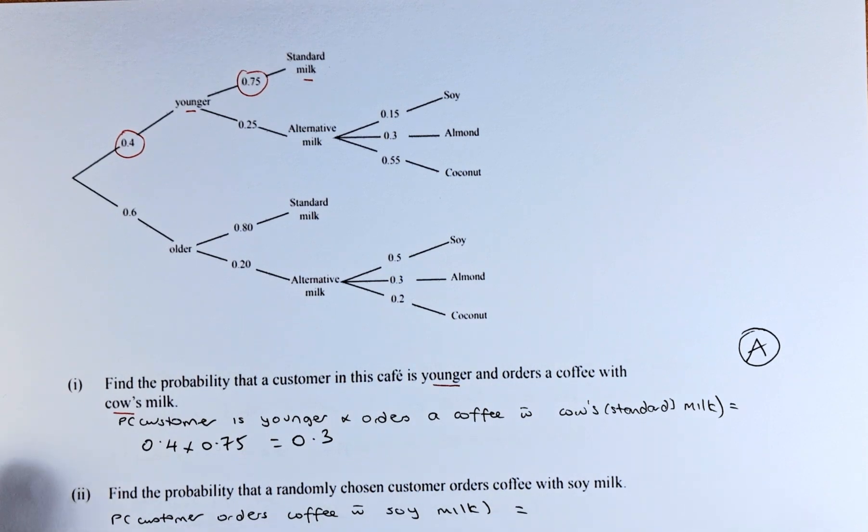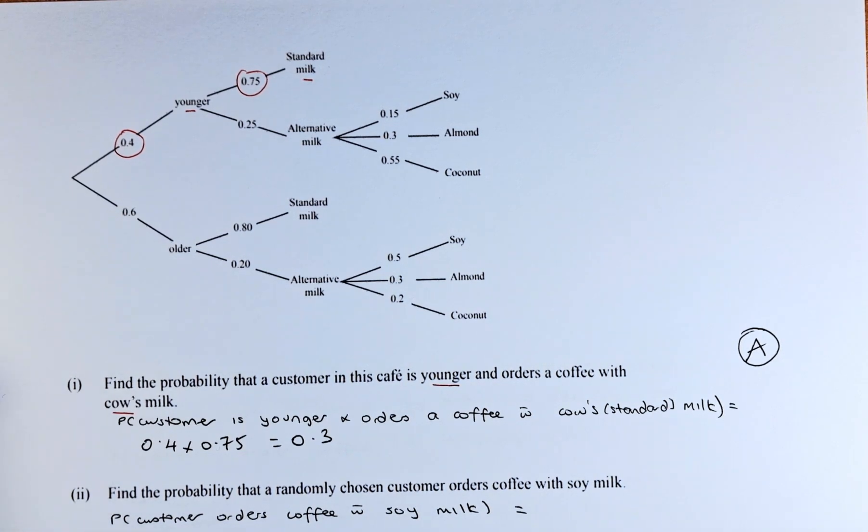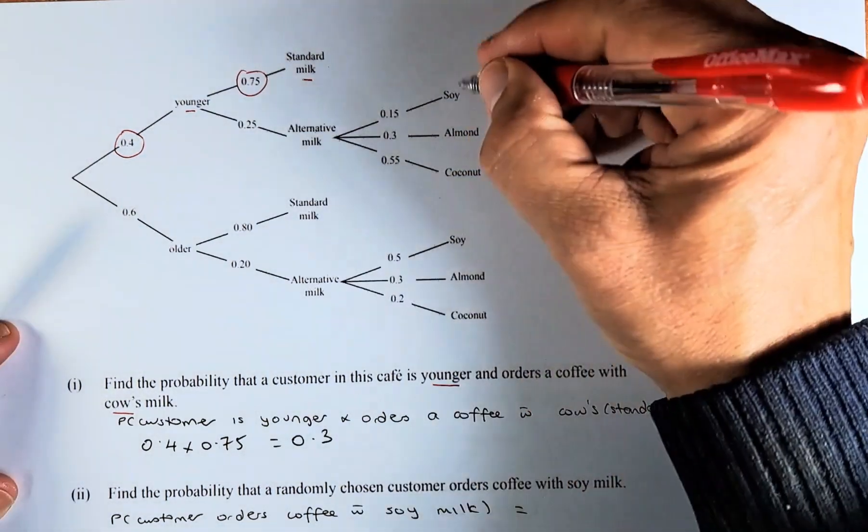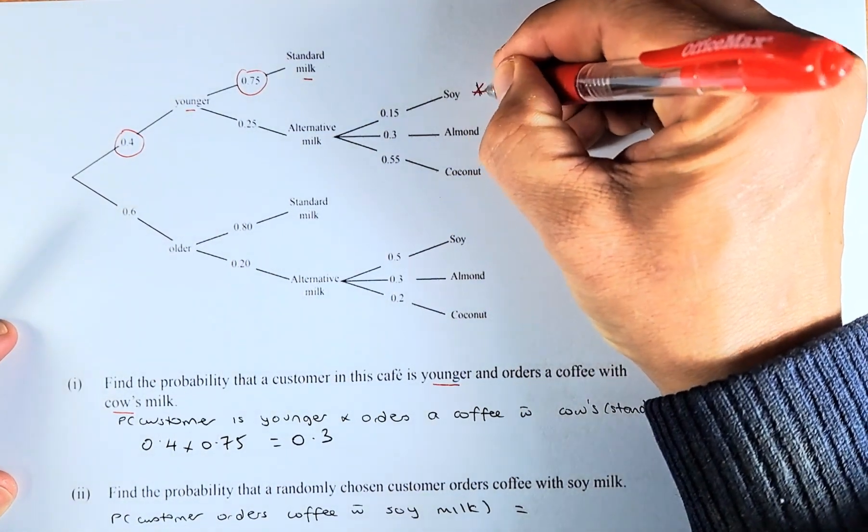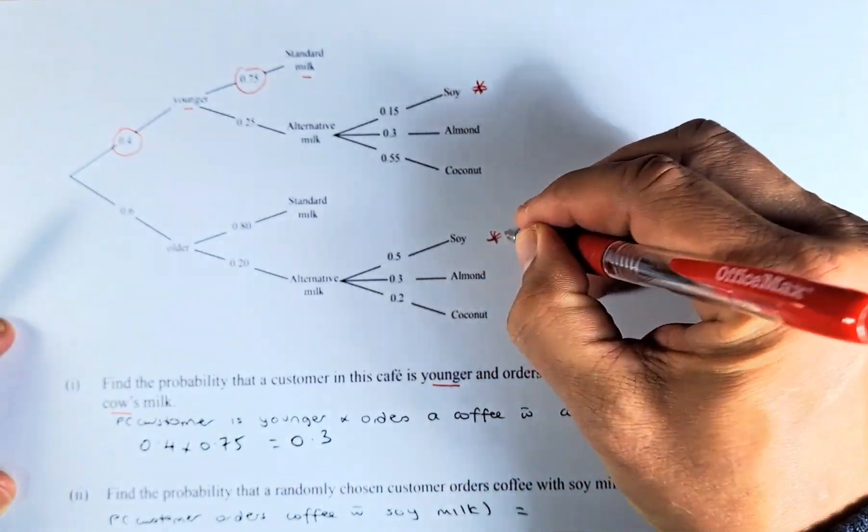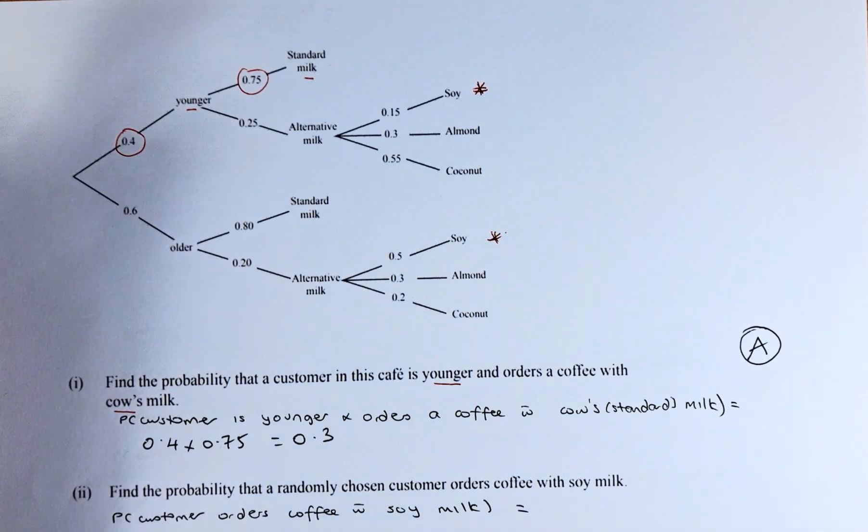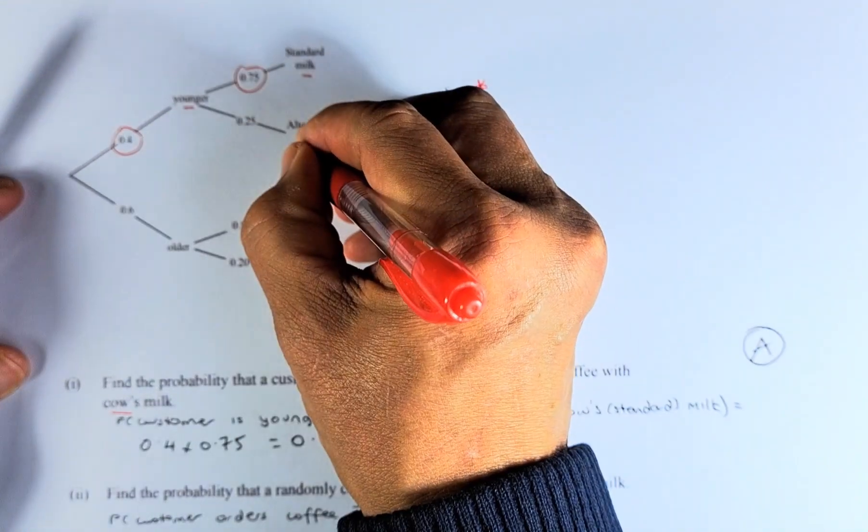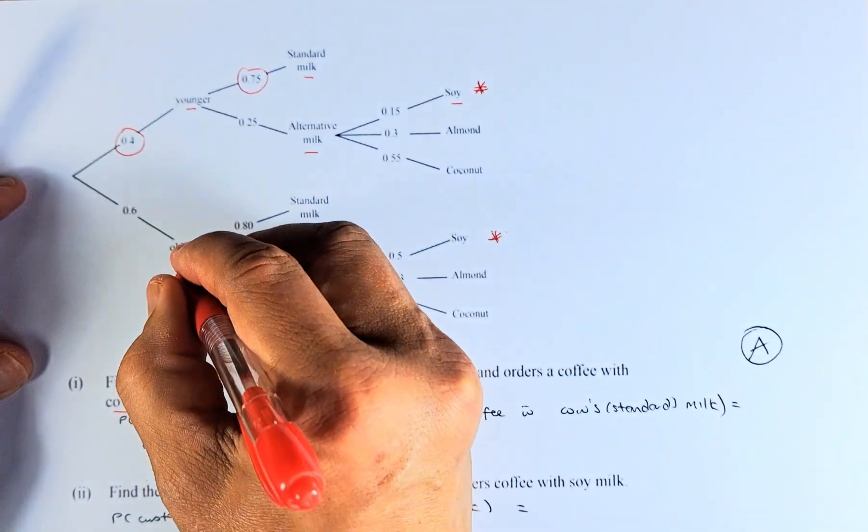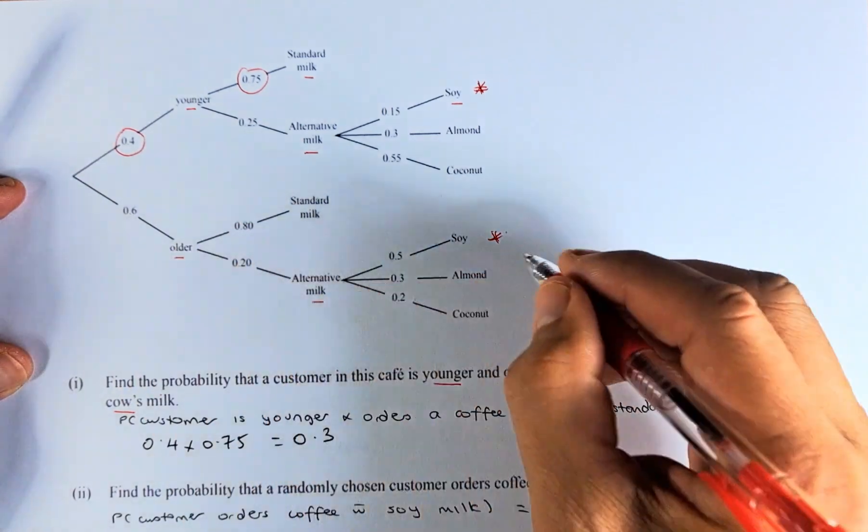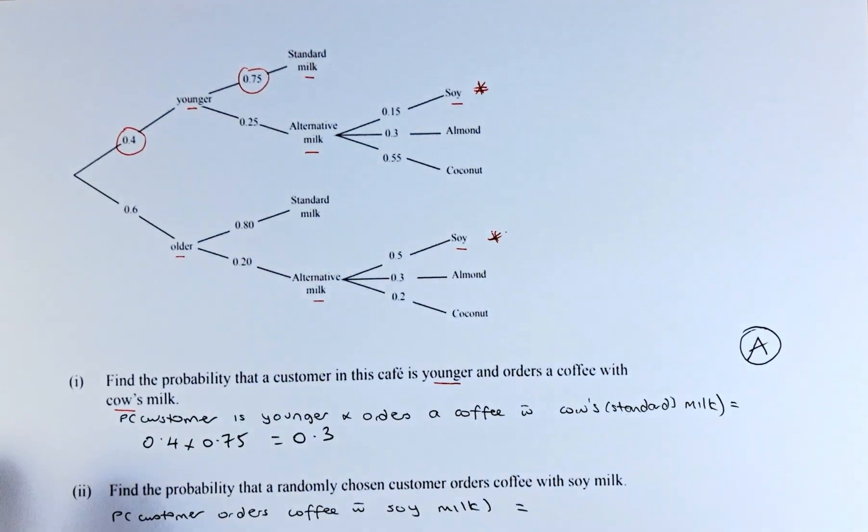Great. Now we shall look at part 2 of question 2A. The next question is find the probability that a randomly chosen customer orders coffee with soy milk. So soy milk is over here or here. So either they are younger or older. So to calculate that, we need to find younger, alternative milk and soy, and the other one is older, alternative milk and soy. So there are two possibilities there.